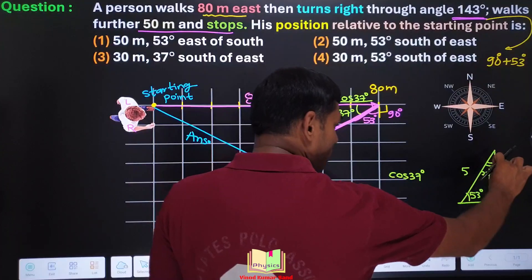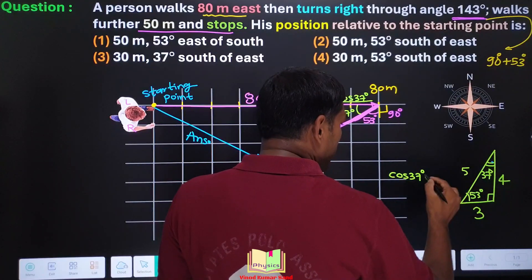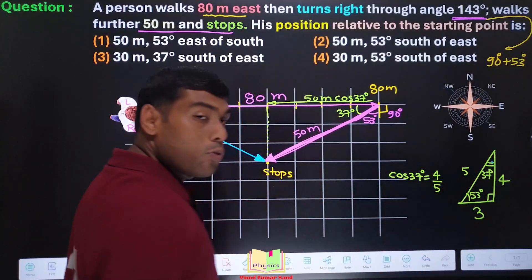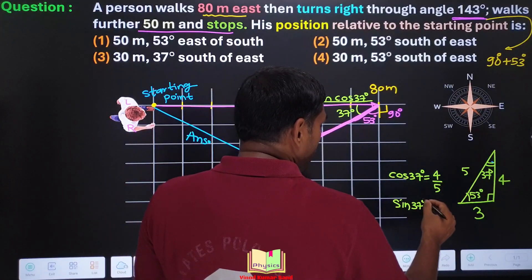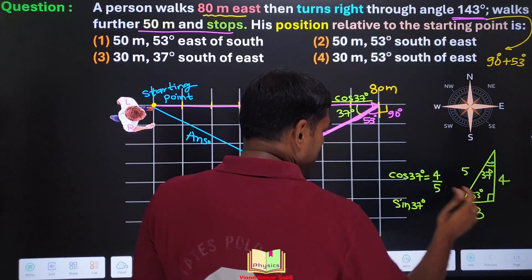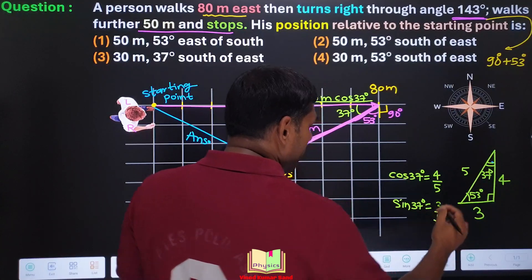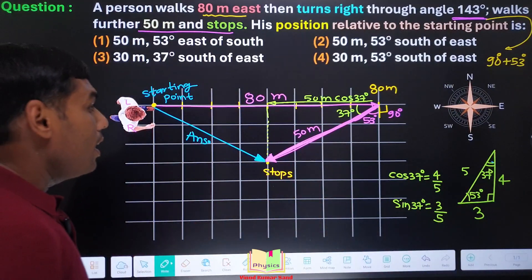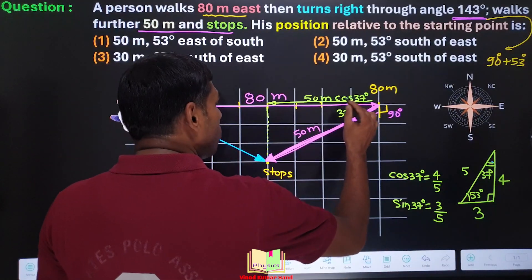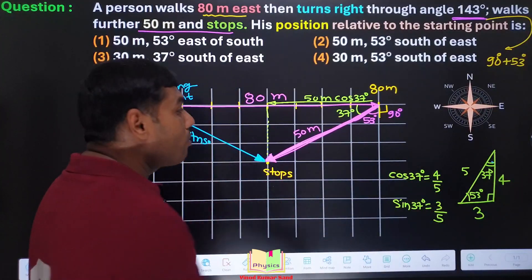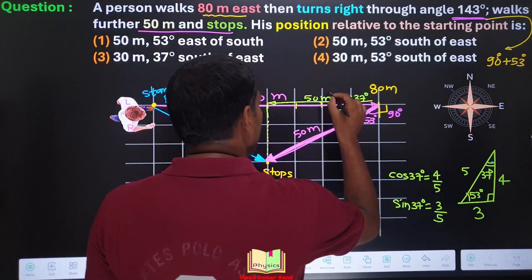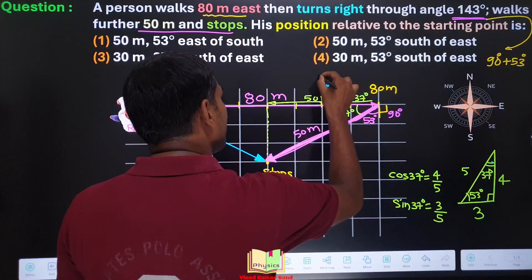Now we can easily find the value of cos 37 degrees. By this triangle, the cos 37 degrees will be equal to 4 by 5. And if we require sin 37 degrees, we can say the sin 37 degrees will be 3 by 5. It means when we compute, this length comes out to be 50 meter into 4 by 5, means this comes out to be 40 meter length.